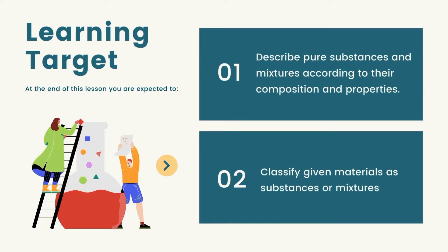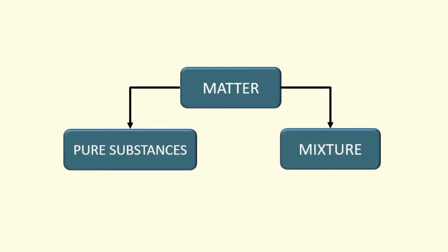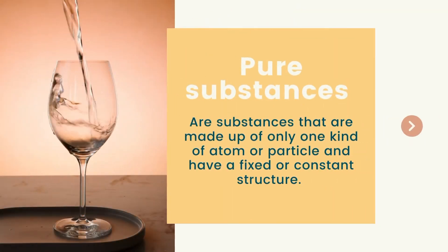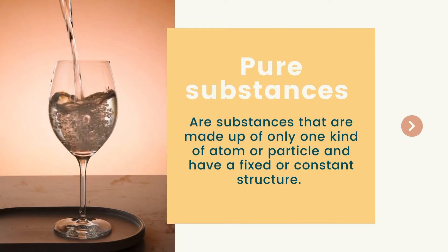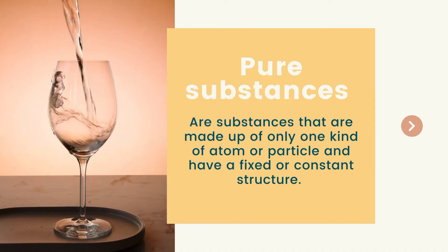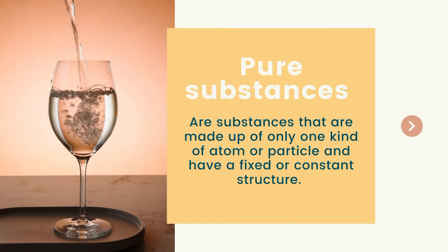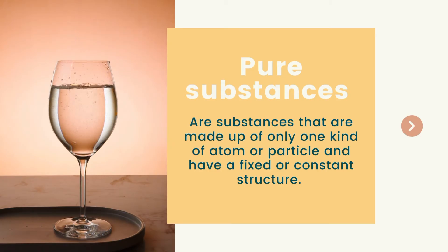Second, you are expected to classify given materials as substances or mixture. We all know that matter can be classified into pure substances and mixture. Pure substances are substances that are made up of only one kind of atom or particle and have a fixed or constant structure. That means pure substances have chemical and physical properties that do not change.